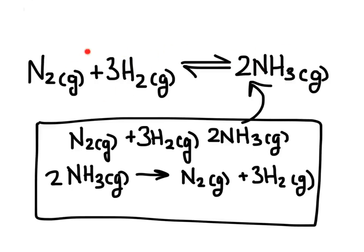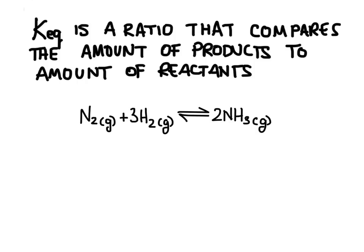Ideally in a chemical reaction we want to produce the stuff on the right side — that's why we write it in that direction. We'd really like the amount of products to be a lot higher than the amount of reactants at equilibrium. The equilibrium constant, given the symbol K_eq, is a ratio that compares the amount of products to the amount of reactants when we reach equilibrium.